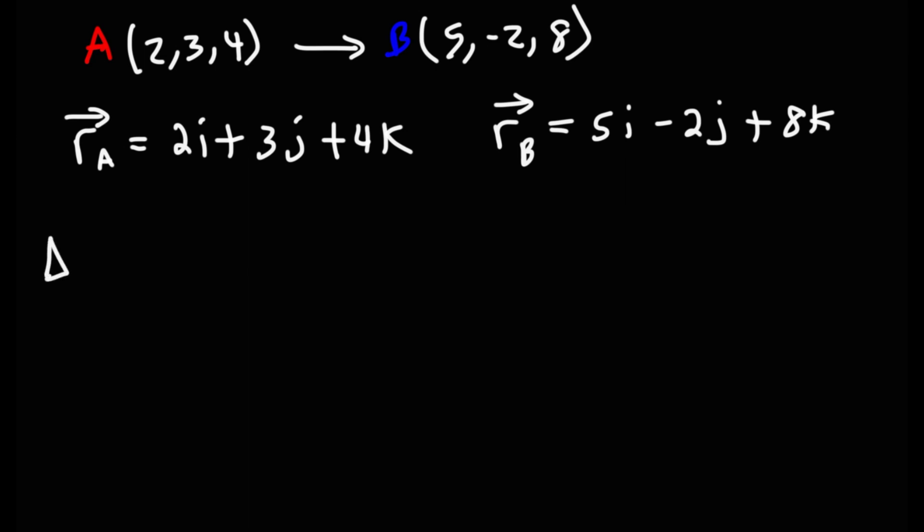Now, to calculate the displacement vector using the position vectors, it's going to be the difference between the two. So as we go from A to B, initial to final, it's going to be the final position minus the initial position. That gives us displacement. Displacement is the change in position. So we're going to take RB and subtract it by RA. And that's going to give us the displacement vector. If we take the final position vector minus the initial position vector, we're going to get the displacement vector.